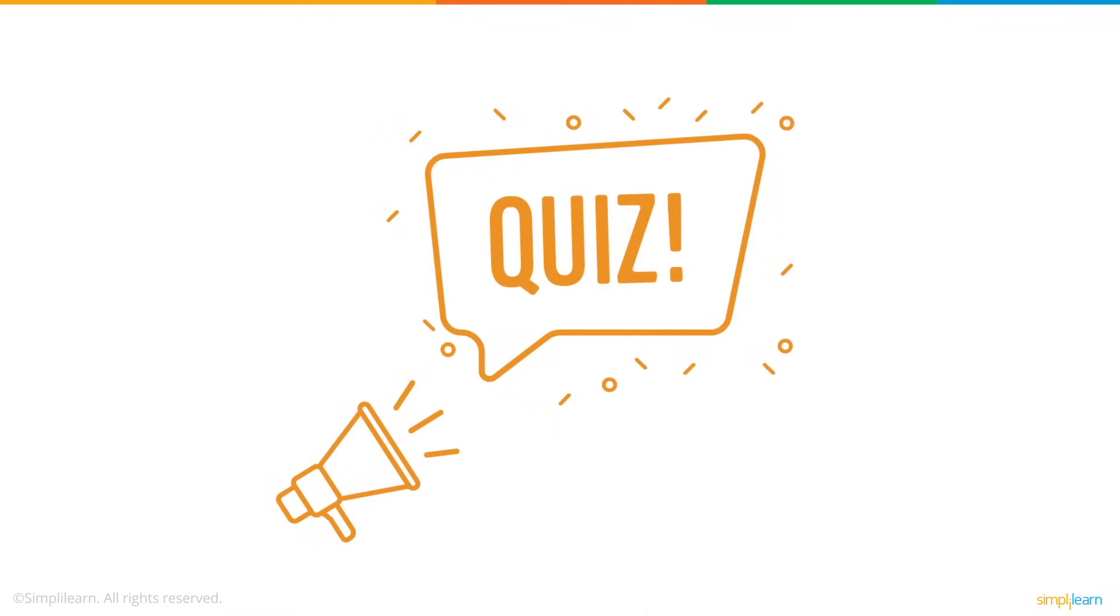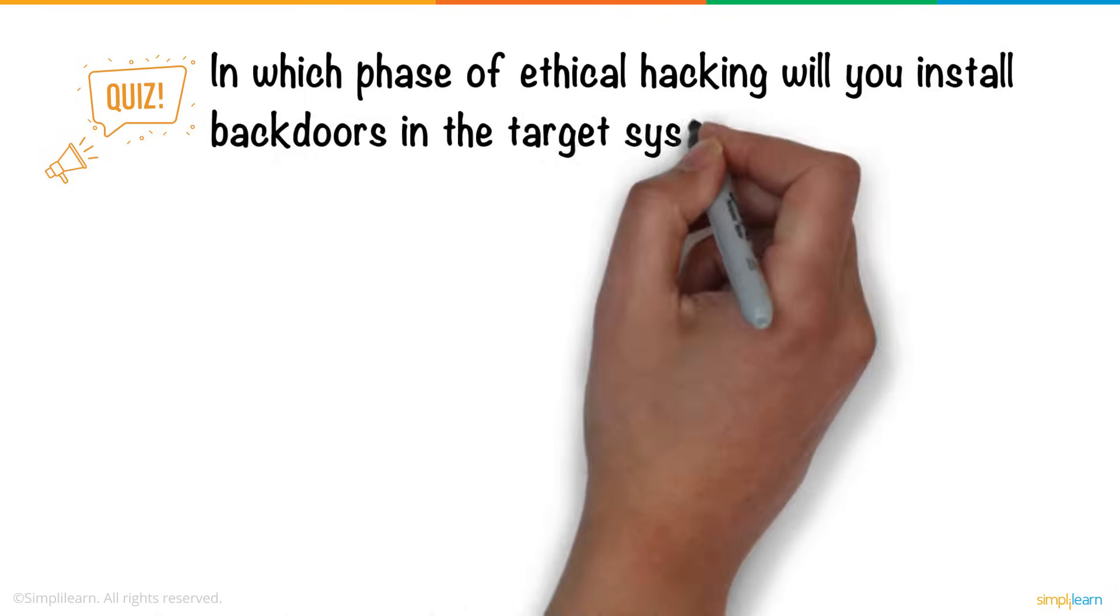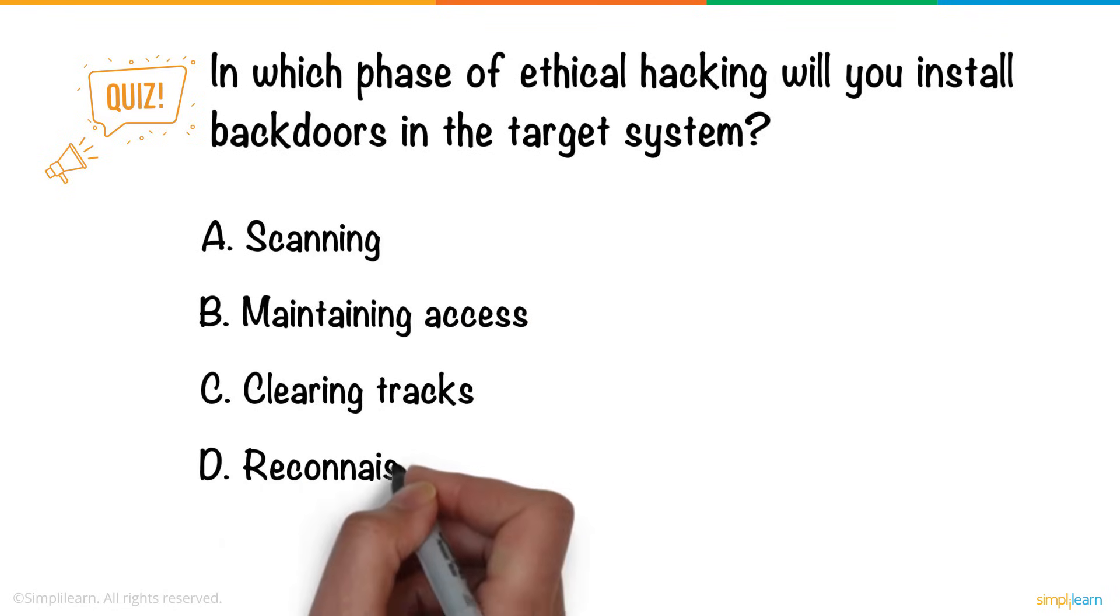So, here's a question for you. In which phase of ethical hacking will you install back doors in the target system? A. Scanning B. Maintaining access C. Clearing tracks D. Reconnaissance